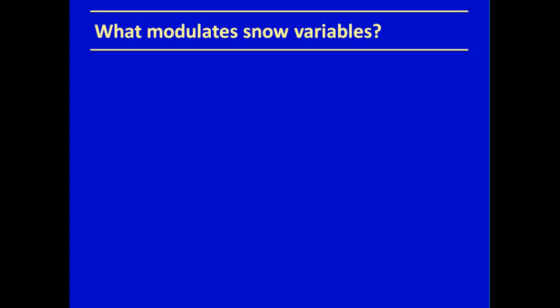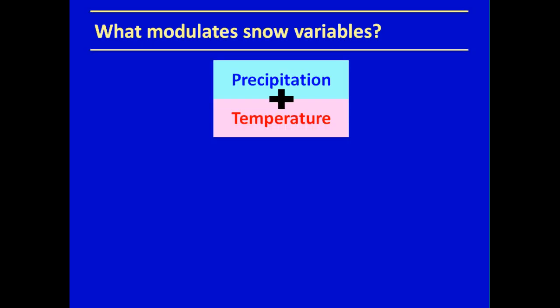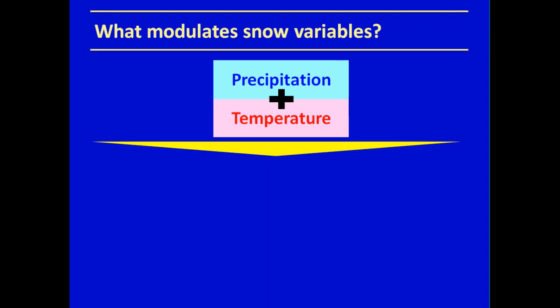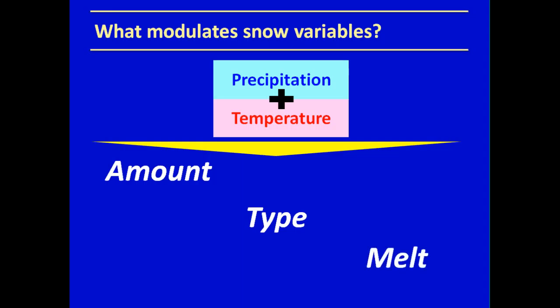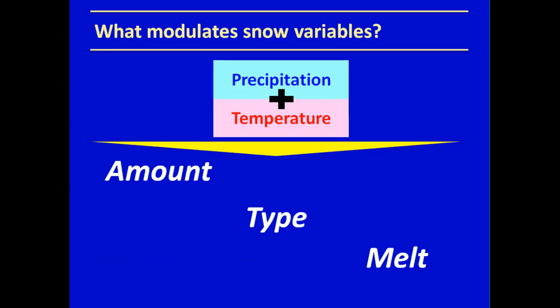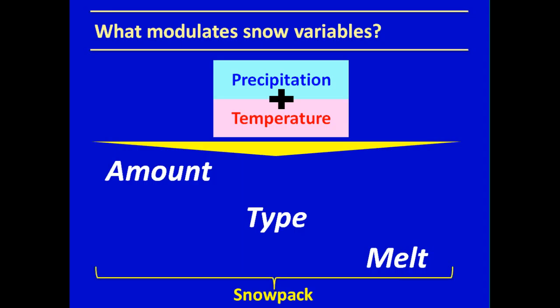What modulates the snow variables? Both precipitation and temperature combine to modulate snow by three main processes: amount, type, and melt. The amount of snow that falls is dependent on the amount of precipitation during winter. The type — snow collects if it's below freezing; if it's above freezing, precipitation falls as rain instead of snow. Amount and type modulate snowfall, whereas all three processes modulate snowpack, because snowpack is the only one affected by snowmelt of what's on the ground.